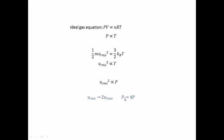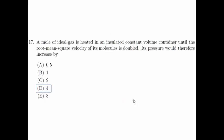And since the root mean square velocity is two times compared to that before, from this relation we can see that the pressure must be four times compared to that before. Therefore the answer to this question is D 4.